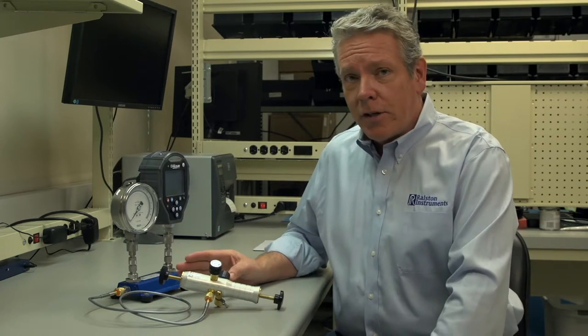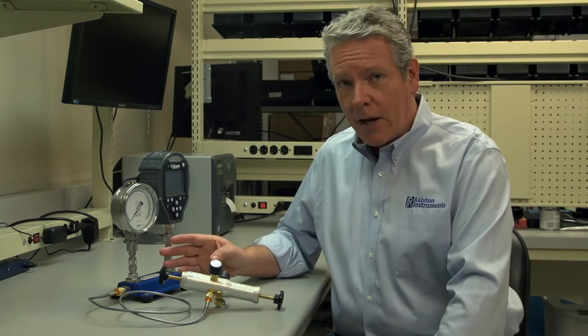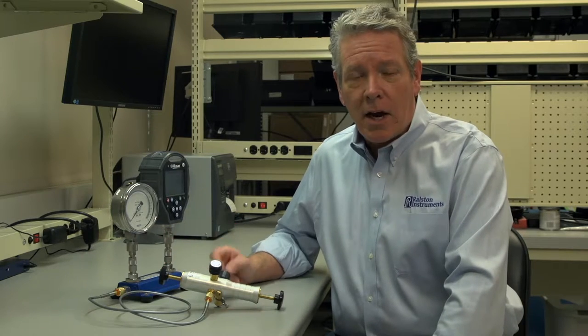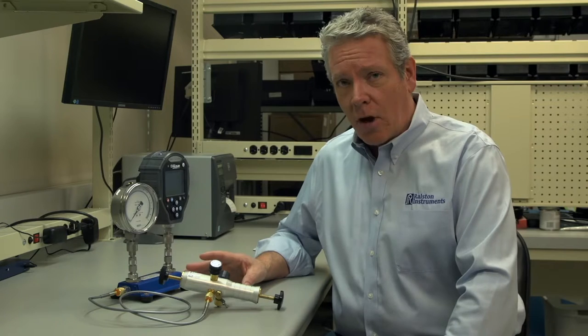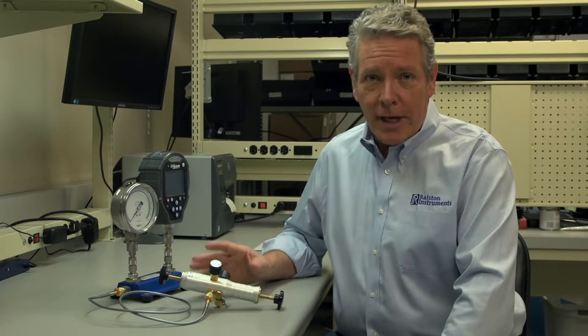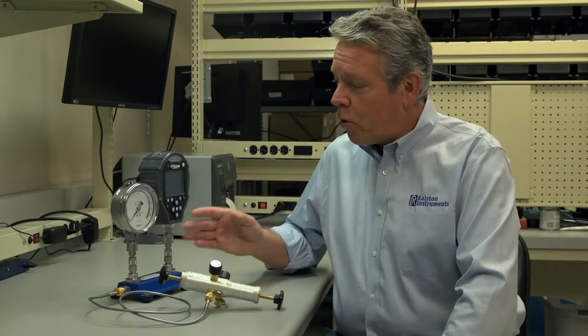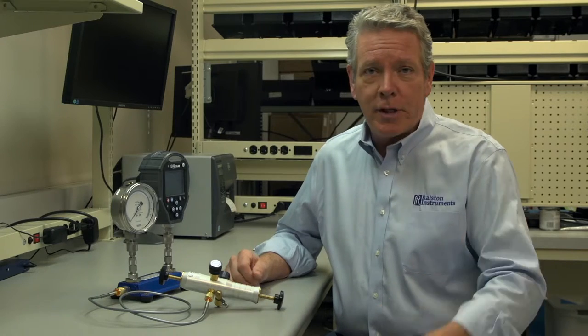I'll demonstrate a calibration test of this quarter percent full-scale accuracy 30 psi analog gauge. Previously we've used the Field Lab desktop software to create and load the calibration test mode with the appropriate number of test points and permissible error.